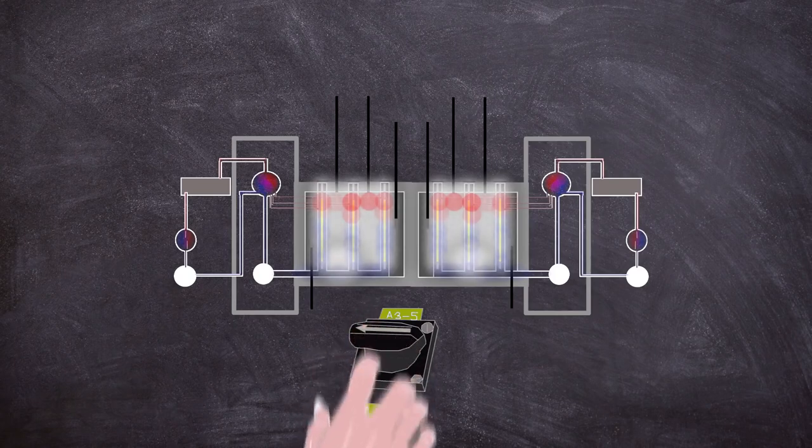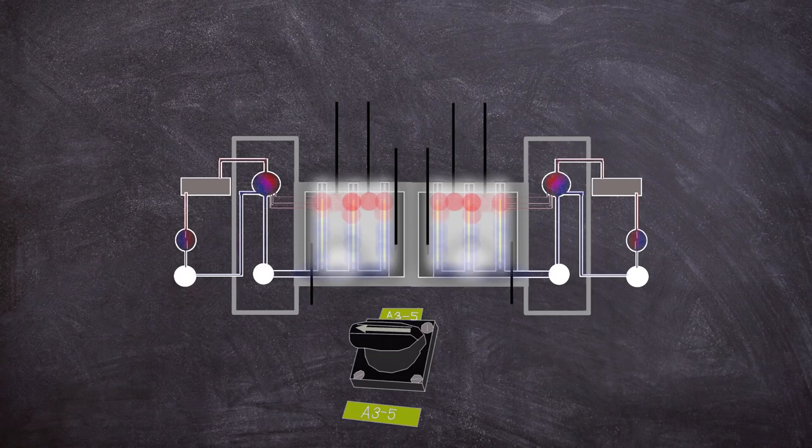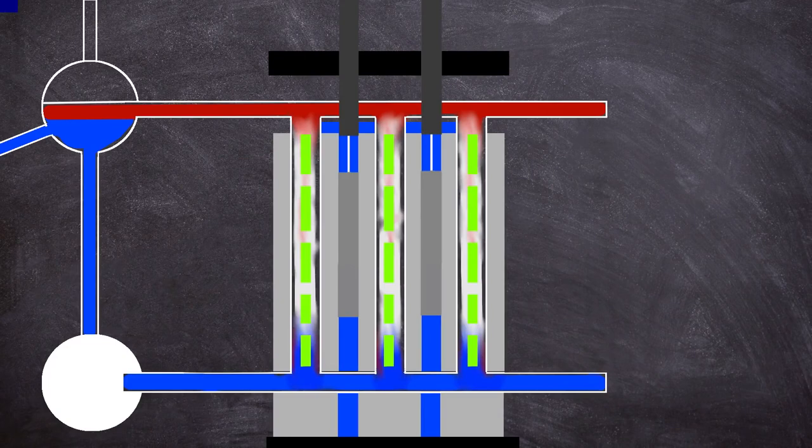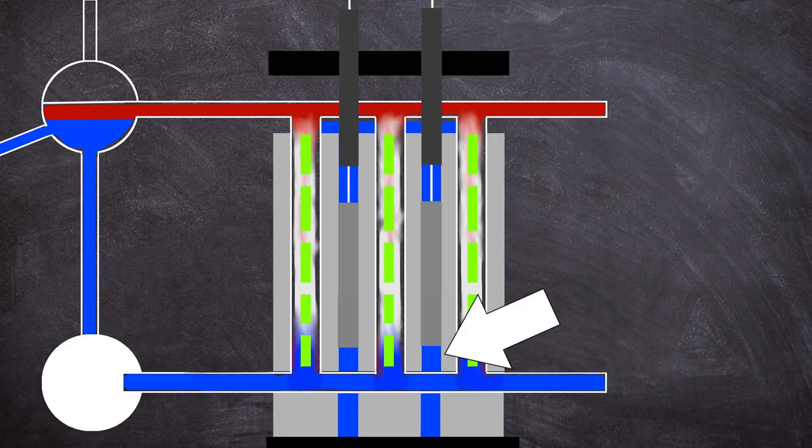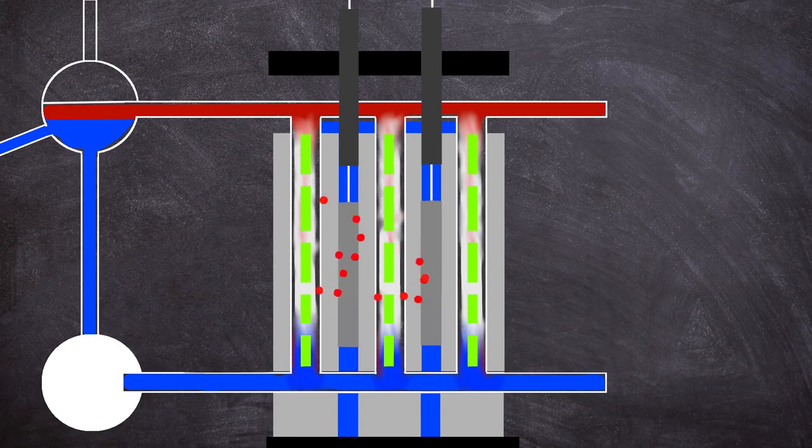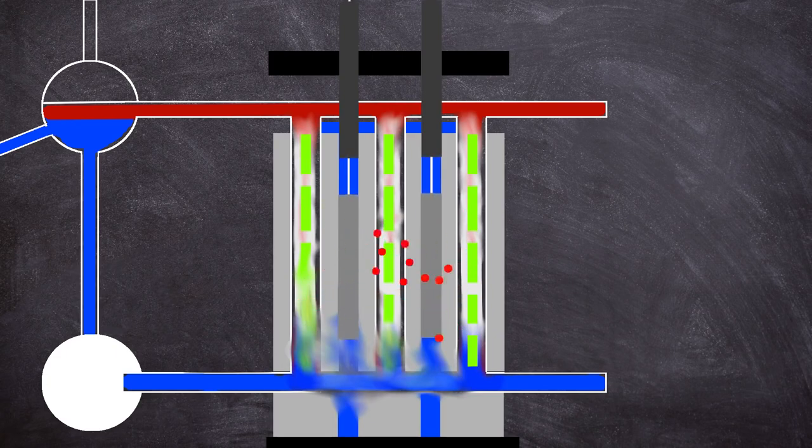The operators pressed the AZ-5 button in response to the worrying increase in power and the control rods started their travel into the reactor core. As the control rod attached graphite displacers moved down to the lower part of the core in their control channels, the neutron absorbing water was pushed out of the way, creating a momentary spike in power, replacing it with neutron moderating graphite. During the spike, some of the fuel rods ruptured, blocking the control rod columns, stopping the control rods at one third insertion. This left the graphite water displacers stuck in the lower part of the core, increasing the runaway power excursion.